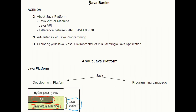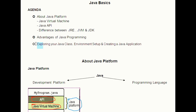Now we are going to discuss the basics of the Java Platform. First we are going to talk about important components of the Java Platform, such as Java Virtual Machine and Java API. Then the difference between JRE, JVM and JDK. Finally, we will explore our first Java class.